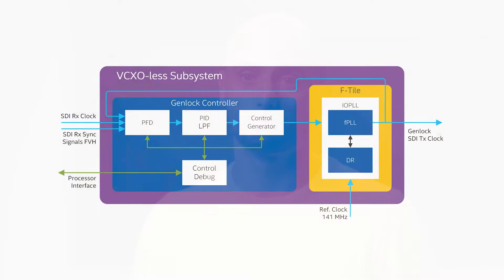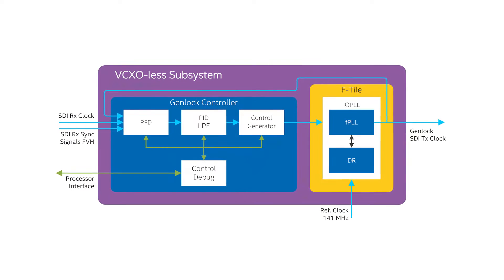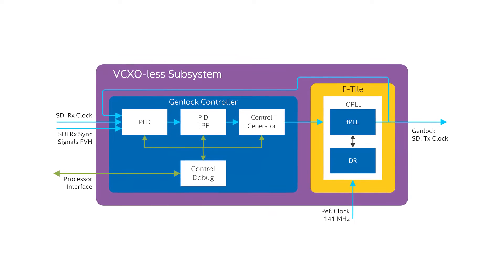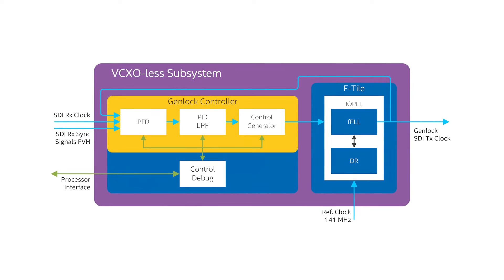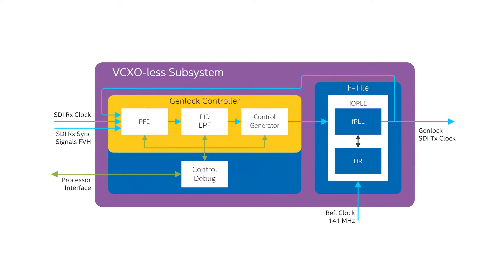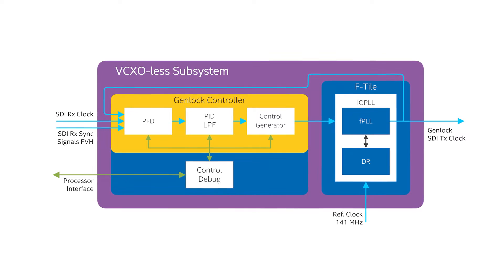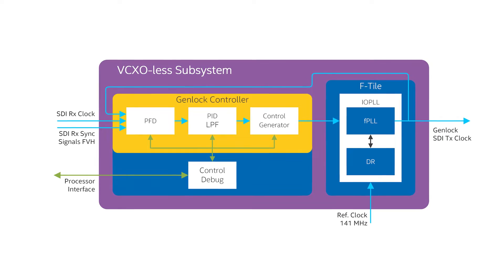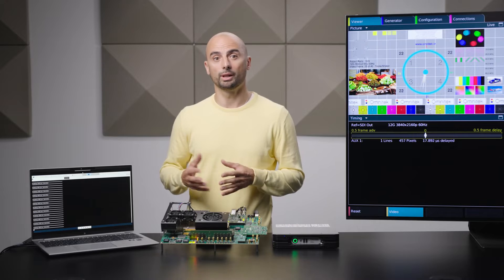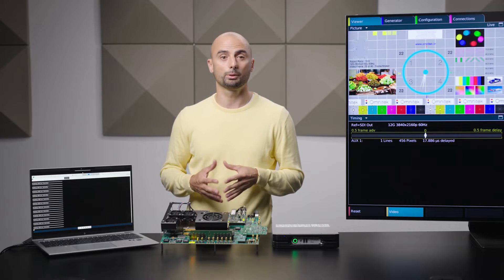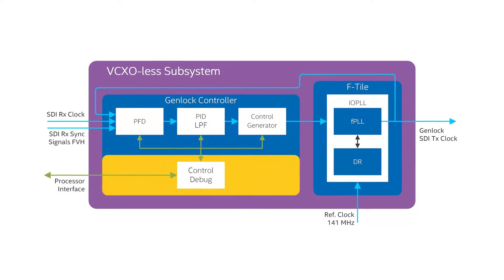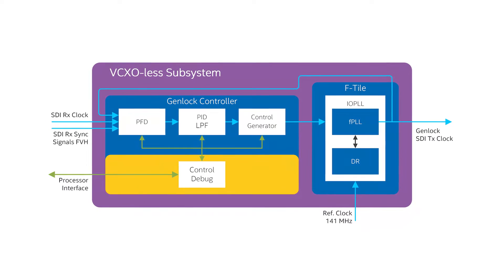A VCXO-less subsystem included in this example design allows locking input and output pixel clocks. This subsystem contains: an F-tile transceiver with dynamic reconfiguration and fractional PLL capabilities to generate an output pixel clock; a phase frequency detector (PFD) and PAD-LPF controller to measure the difference between the input and output pixel clocks and generate a control word to lock the phase of the output pixel clock relative to the input; and a set of debug control registers to diagnose the status of the video system.